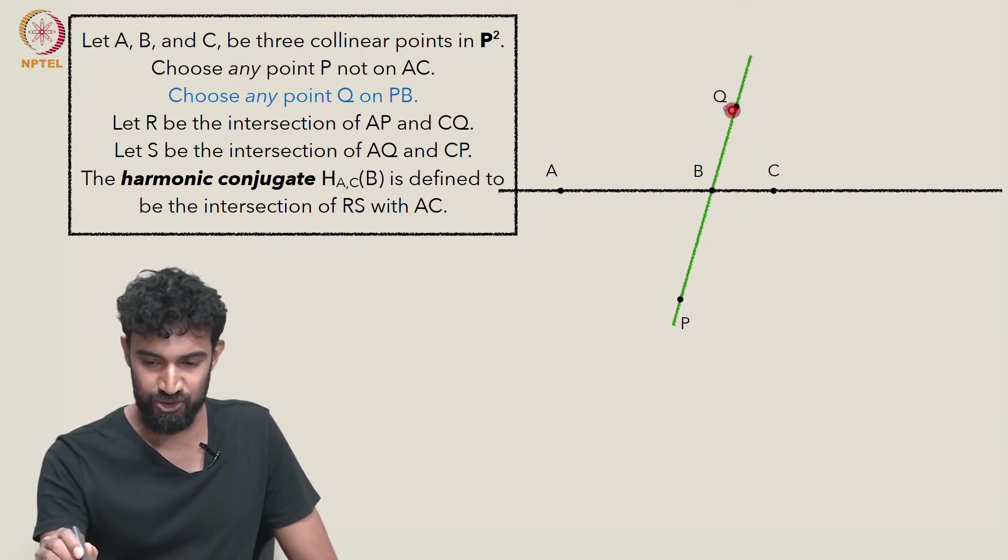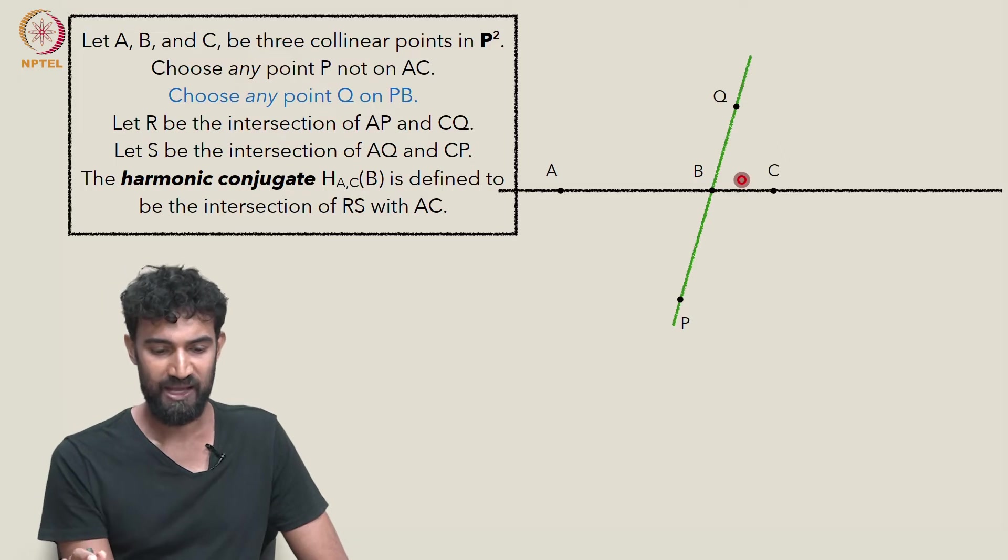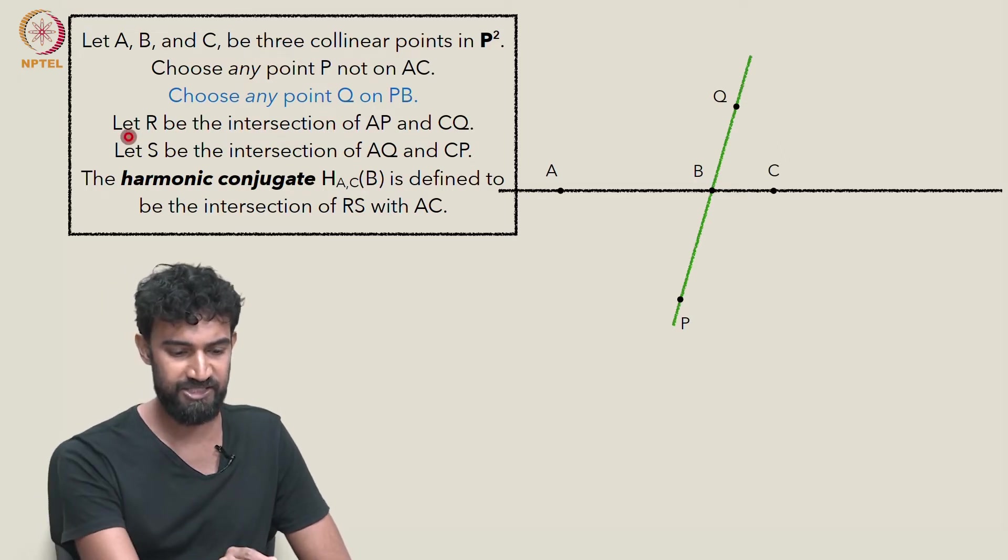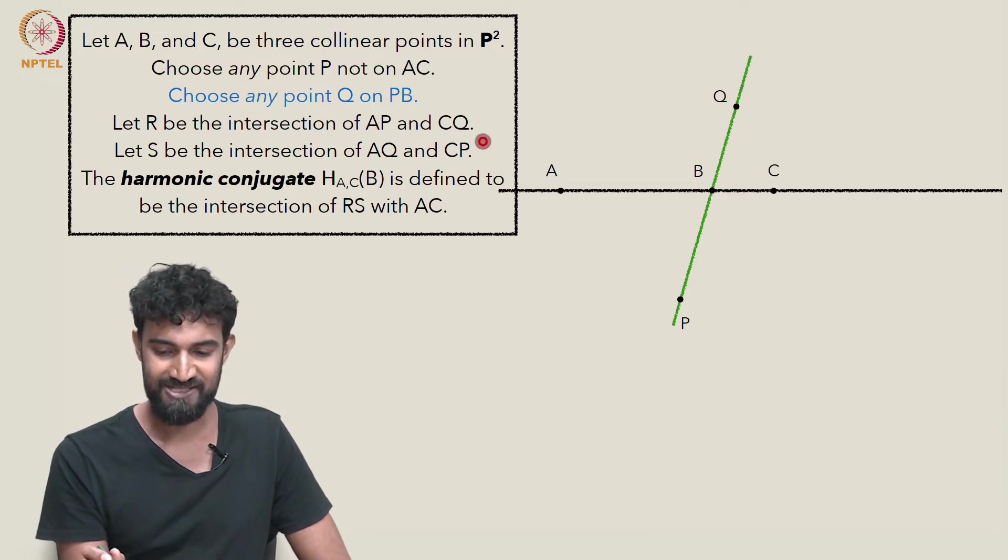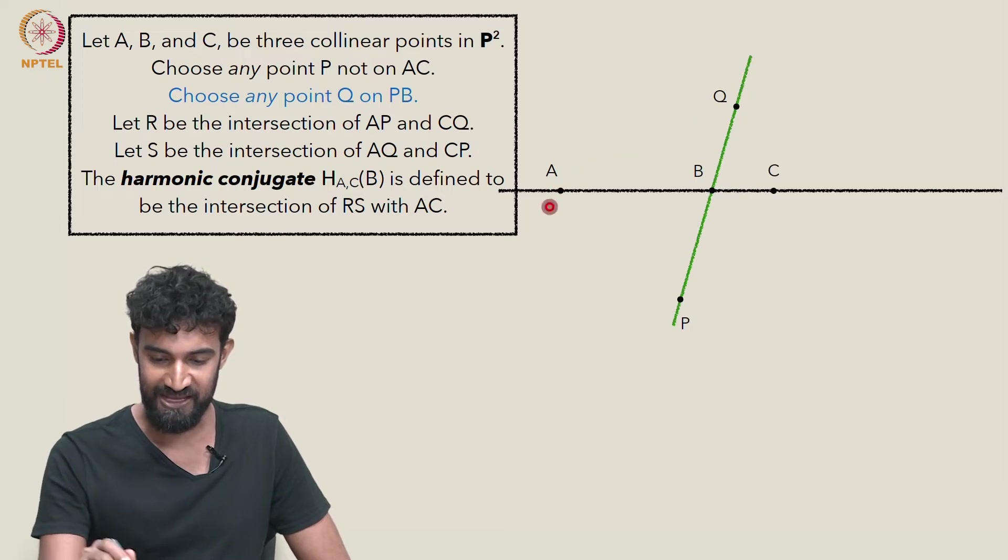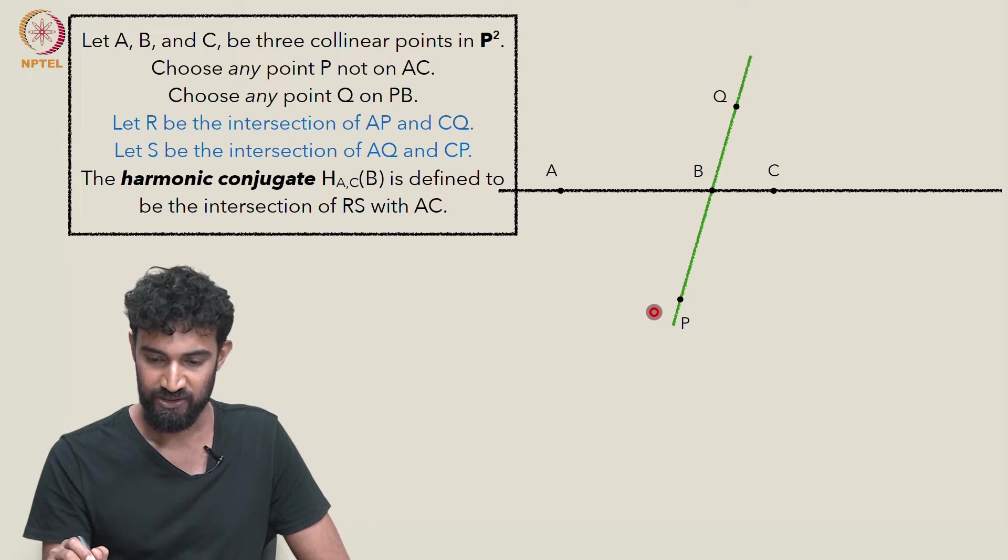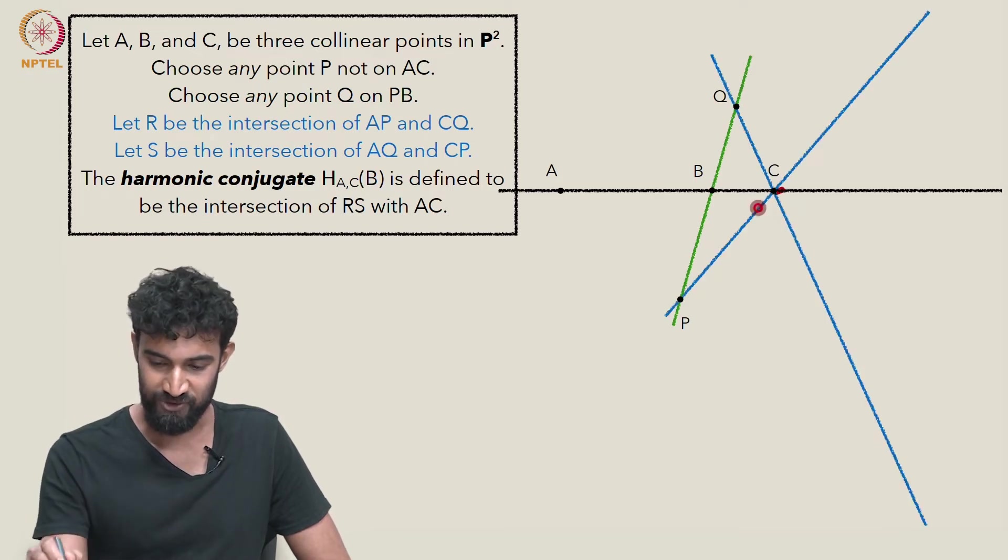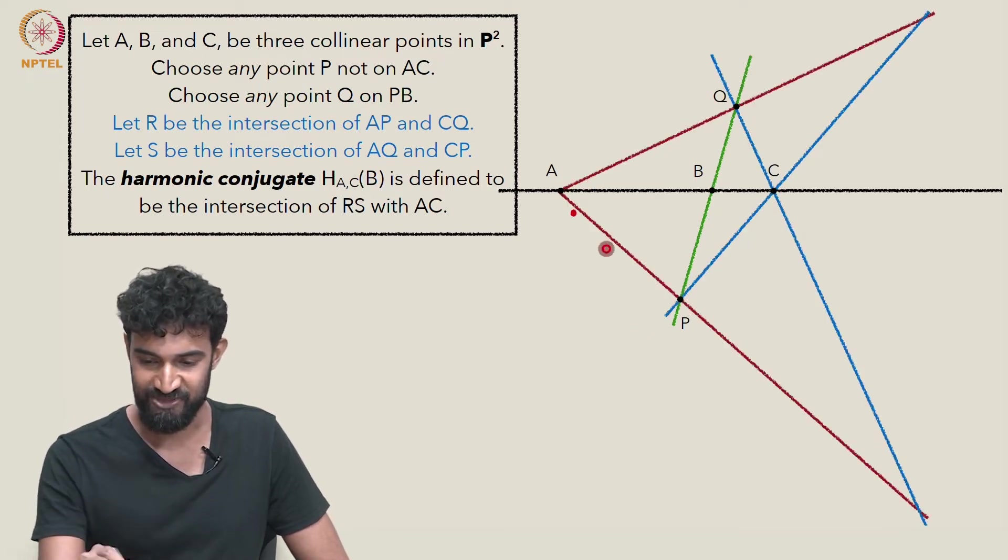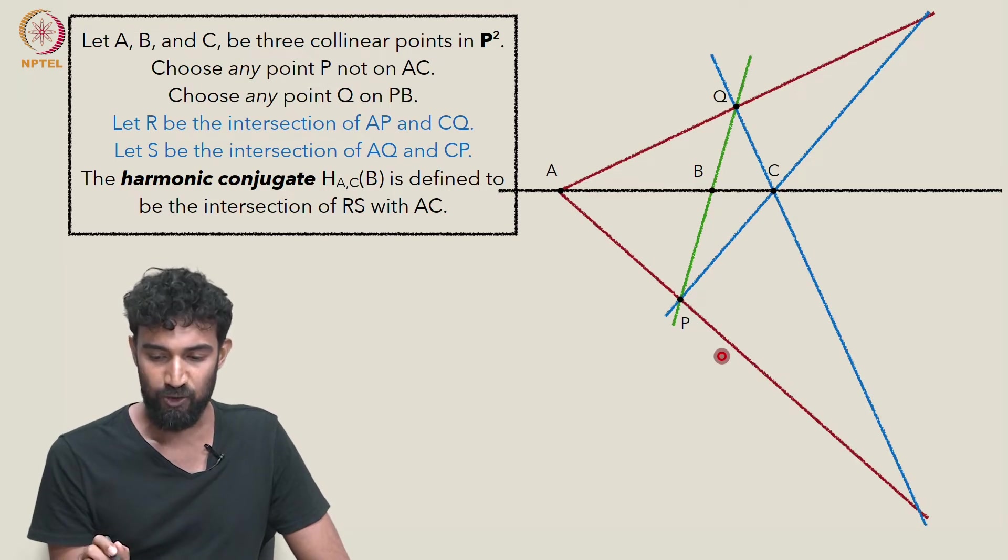So let's choose a Q here on this other side. And let's continue our construction. Let's connect up A to P and Q and connect up C to P and Q. I'll do C first. And then let's connect A to P and Q.